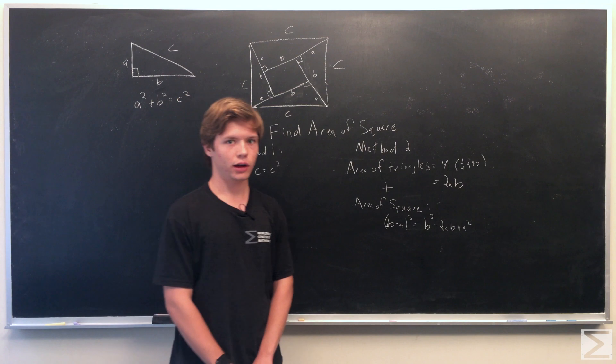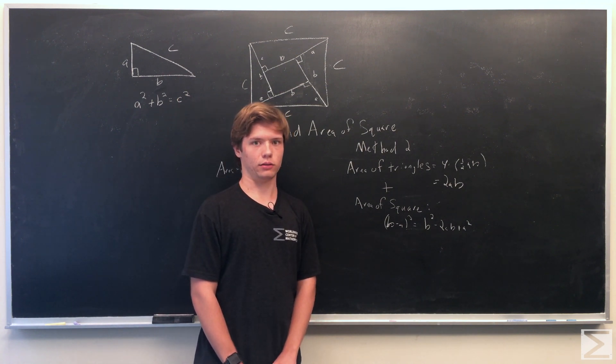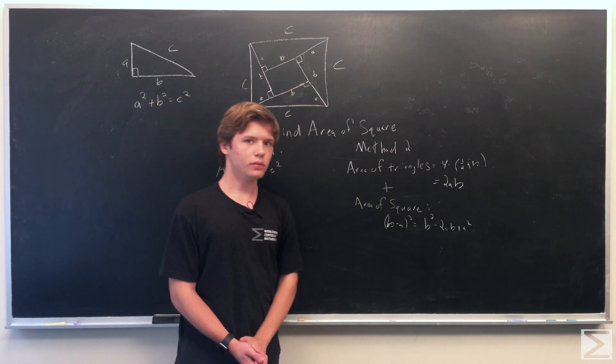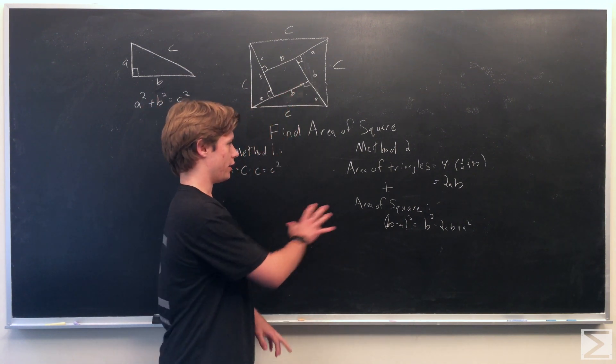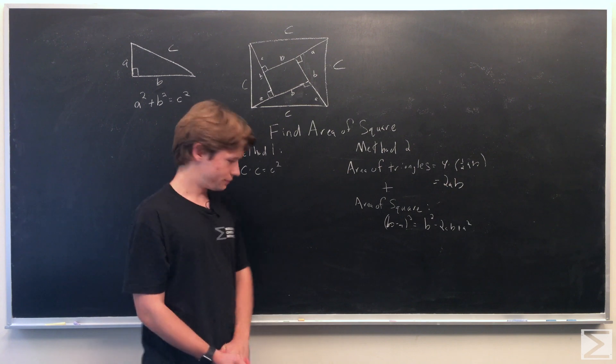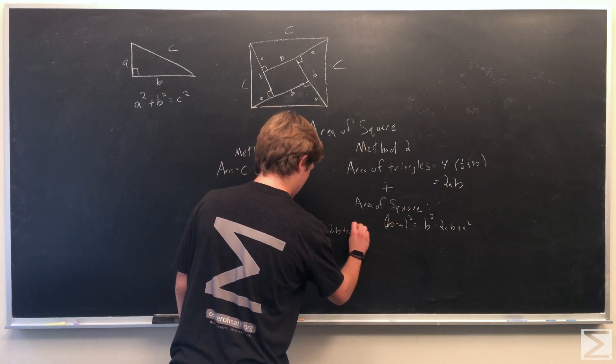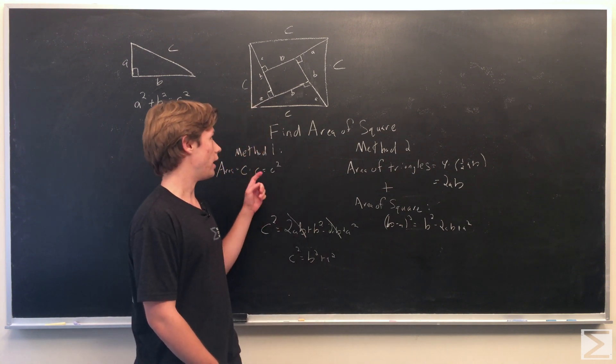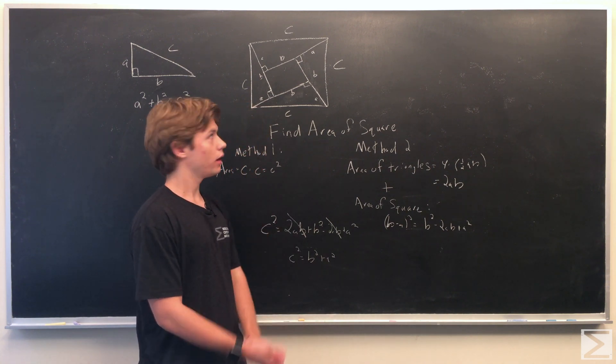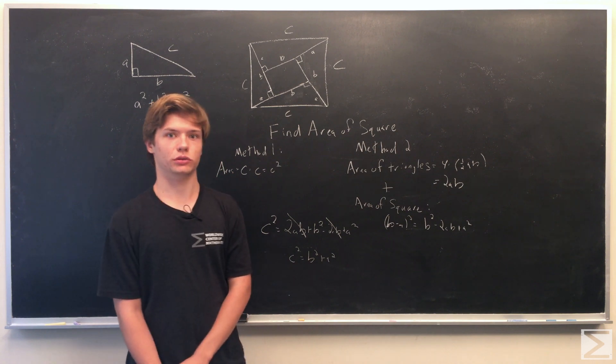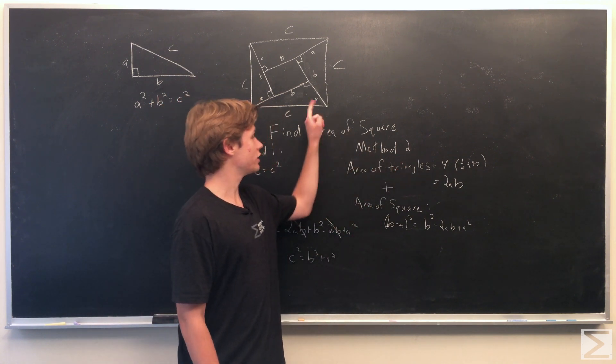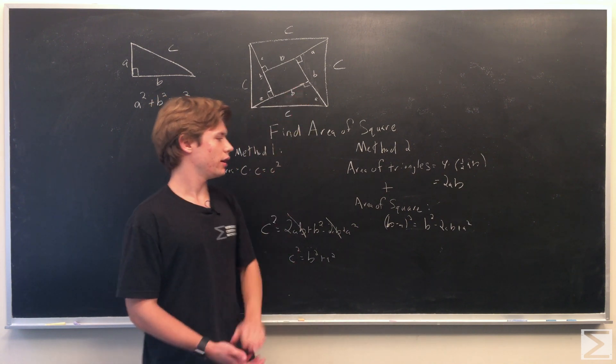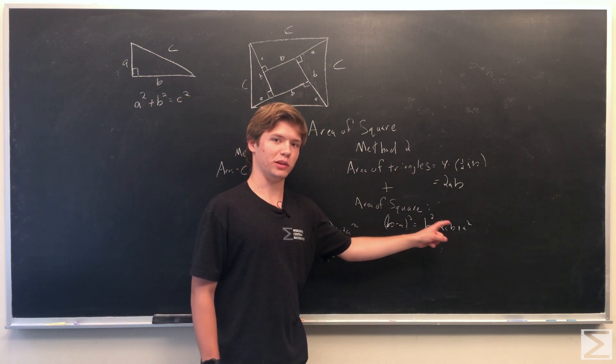And so now we have the area of the square where we just look at the side c and we look at the things inside, and so now we can set these two things equal to each other. And so doing that we take the method one, c squared, we set that equal to area of the triangles which is equal to 2ab plus the area of this inner square which is equal to b squared minus 2ab plus a squared.